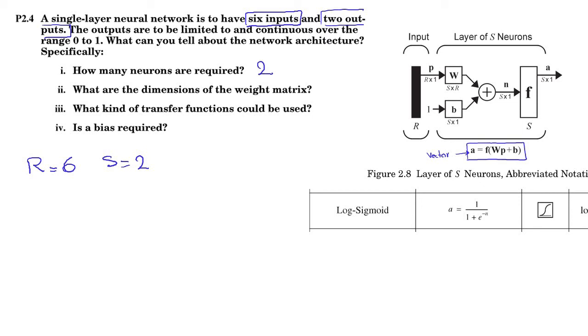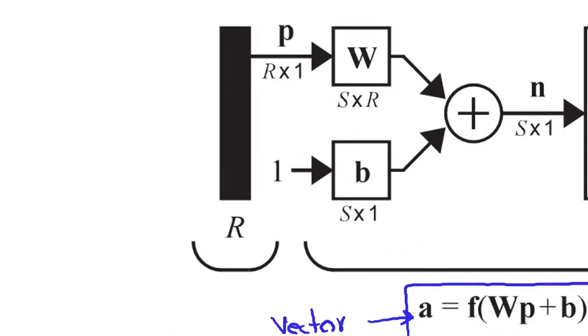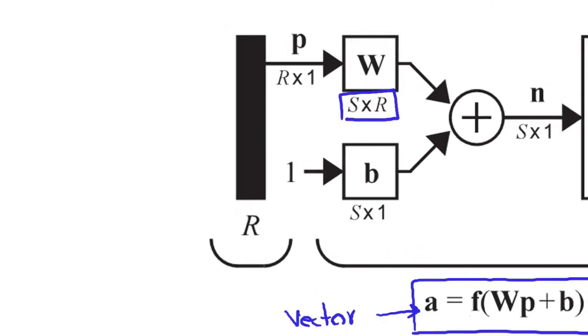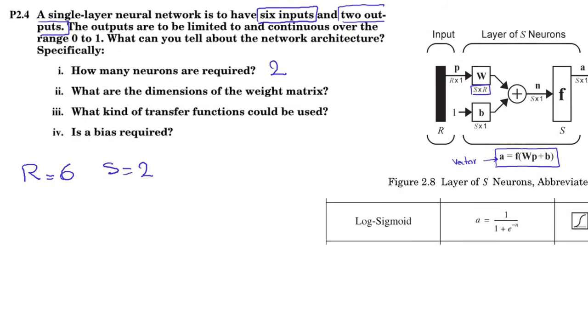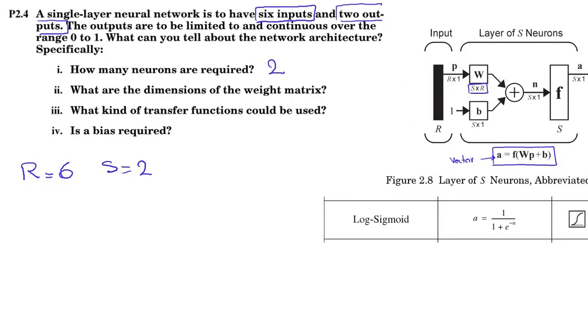And the second question is, what are, how about, what are the dimensions of the weight matrix? So, W, here you can see, this is s times r. So, it is 2 by 6.